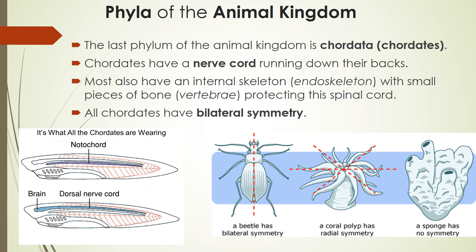Last but not least is the chordate phylum, and this is the one that we belong to. Chordates have a nerve cord that runs down their backs, delivering messages from the brain to the rest of the body and back. Most have an internal skeleton called an endoskeleton, with small pieces of bone called vertebrae protecting the spinal cord. If you have a spine, you're called a vertebrate; if you don't, you're an invertebrate — and the most intelligent invertebrate is the octopus. Chordates also have bilateral symmetry, meaning you can cut an organism down its length and have roughly even halves.